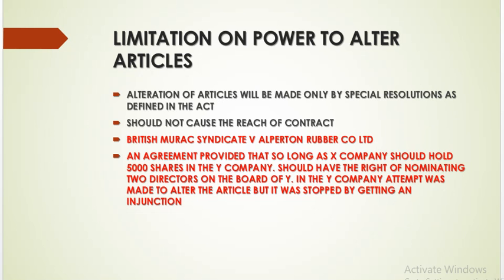In the case of British Moorick Syndicate versus Alpersian Rubber Company Limited, there was an agreement that so long as X company should hold 5000 shares in Y company, X company had the right of nominating two directors on the board of Y. The Y company made an attempt to alter the article, but it was stopped by X company getting an injunction because it was a violation of the agreement with X company.